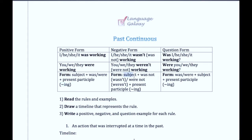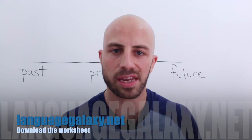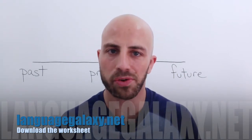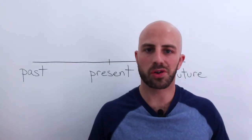For the negative: subject + was not/were not + -ing form. For the question form, you reverse the subject and 'was/were': was + subject + -ing. You can download these and other worksheets at Language Galaxy to help you in your English learning. Let's get started — the chart shows you how to use past continuous.